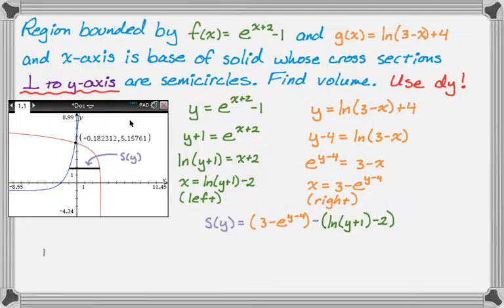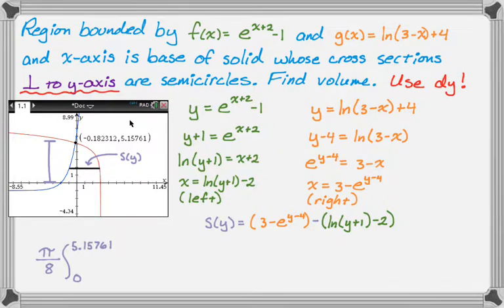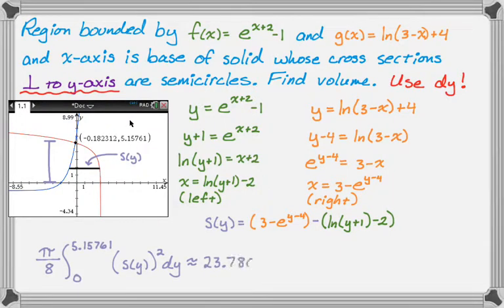The integral becomes π/8 times the integral from 0 to 5.15761 of [s(y)]² dy, where 5.15761 is the y-coordinate of the intersection point. Store that value on your calculator and use as many decimal places as possible. The calculator gives approximately 23.786.